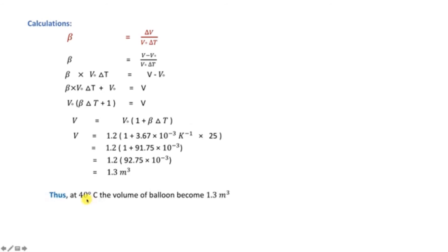Rearranging the equation: beta × V₀ × ΔT = V − V₀. Taking V₀ common: V = V₀(1 + beta × ΔT). This is the working formula for volume expansion.